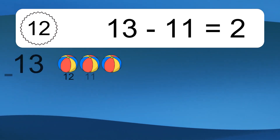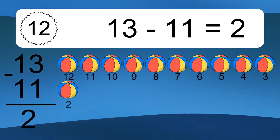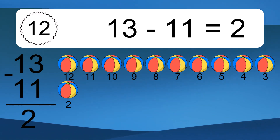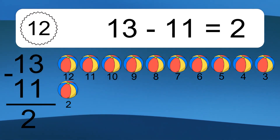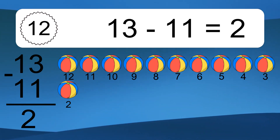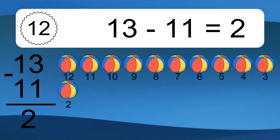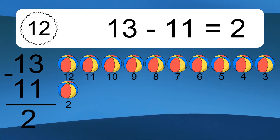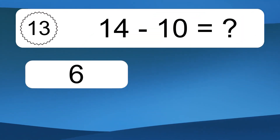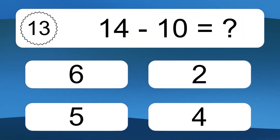13 minus 11 equals 2. Let's count it. 12, 11, 10, 9, 8, 7, 6, 5, 4, 3, 2. 14 minus 10 equals what?